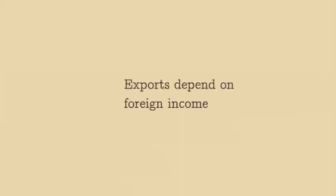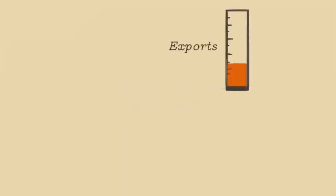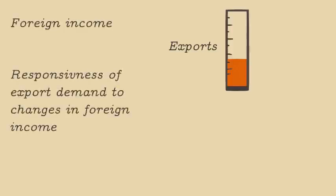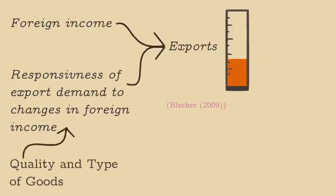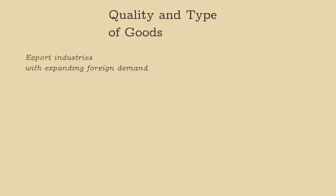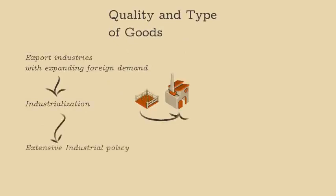The third foundation is that exports depend on foreign income. Exports can be difficult to expand. The main variables affecting exports are foreign income and the responsiveness of export demand to changes in foreign income. The real exchange rate — that is, the difference in prices between goods produced in different countries — does not change much, and consumption patterns are relatively unaffected by any change in relative prices which do occur. Also, the responsiveness of exports to changes in foreign income depends a lot on the quality and type of goods produced, as well as the trade patterns a country has formed. Countries must develop export industries which grow significantly as foreign income grows, and this is a difficult process, often requiring industrialization, which many heterodox economists would say requires extensive government industrial policy.